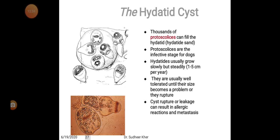Thousands of protoscoleces can fill the hydatid sand. Protoscoleces are the infective stage for dogs. Hydatids usually grow slowly but steadily, 1 to 5 cm per year. They are usually well tolerated until their size becomes a problem or they rupture. Cyst rupture or leakage can result in allergic reaction and metastasis.